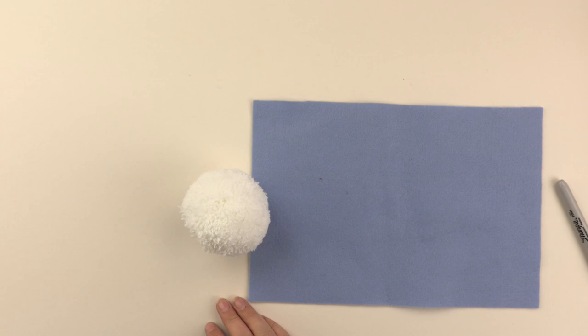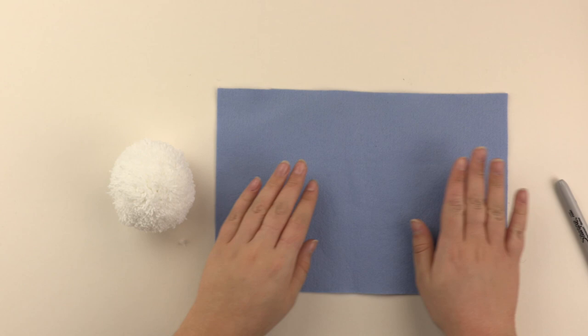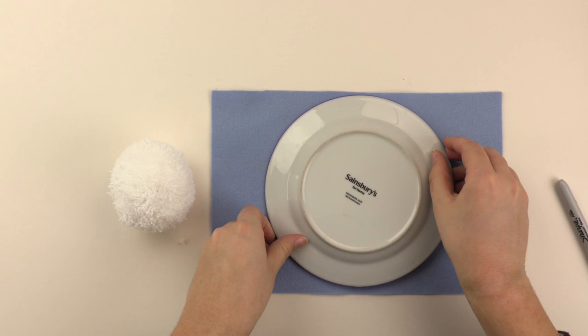So now that I've made my pom-pom, I'm then just going to start on making the gnome's hat. So grabbing a piece of blue felt and a round plate, I'm just going to carefully draw around.